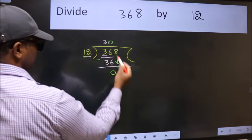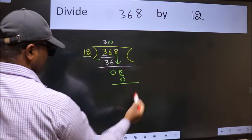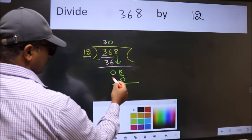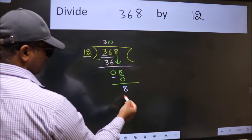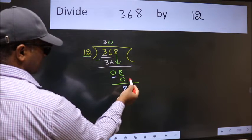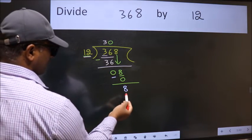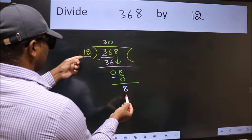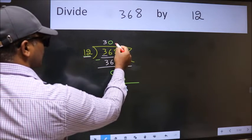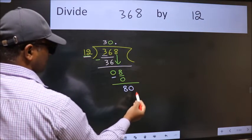So 12 into 0, 0. Now we subtract. We get 8. Over here, we did not bring any number down. And 8 smaller than 12. So now we can put dot and take 0.